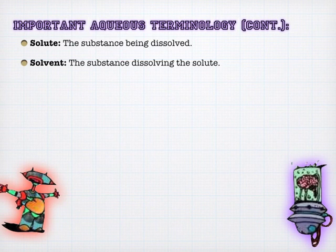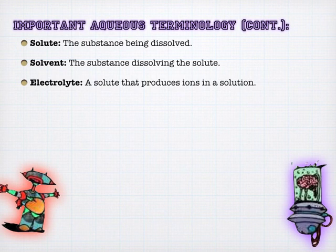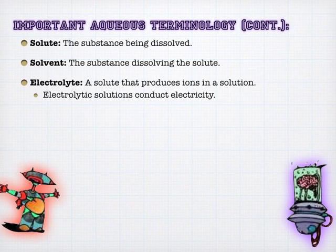The solute is the thing being dissolved, versus the solvent that's doing the dissolving. An electrolyte is a neat little term — you've heard of electrolytes through sports drinks. An electrolyte is simply something that produces an ion in solution. So if you had a pitcher of salt water, you could say you have a drink with electrolytes. That's all it is — something that breaks up into ions.